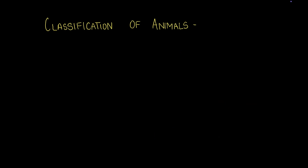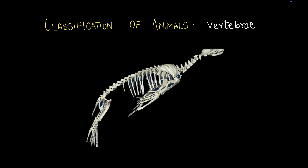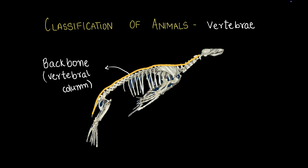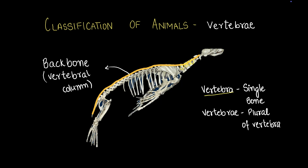The next basis of classification is vertebrae. Here's a skeleton — can you see this chain of bones that runs along the back? It's called the backbone or the vertebral column. A vertebra is a single bone; each one of those individual bones is called a vertebra, and the plural is vertebrae. The entire string of bones — the entire backbone — is called the vertebral column.